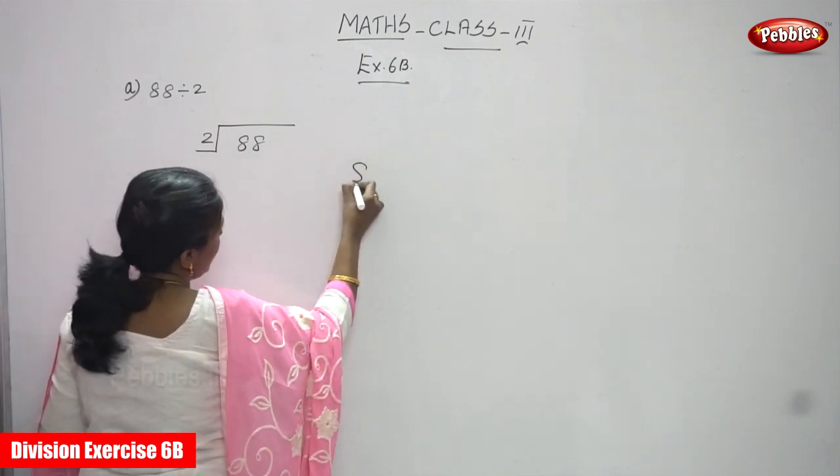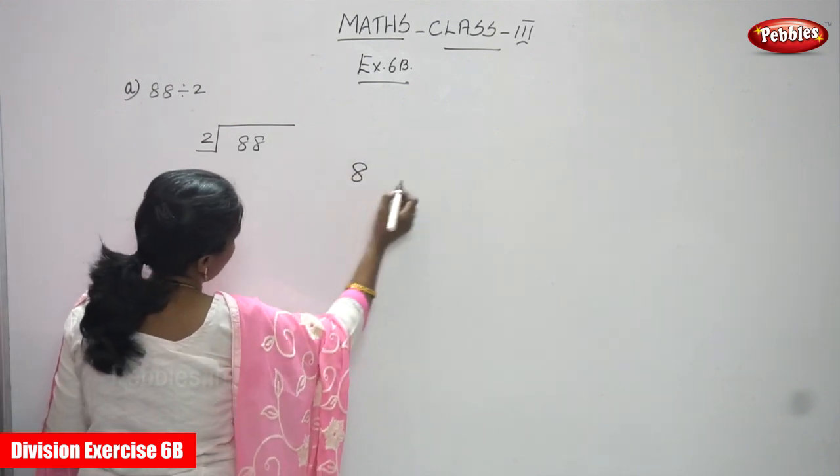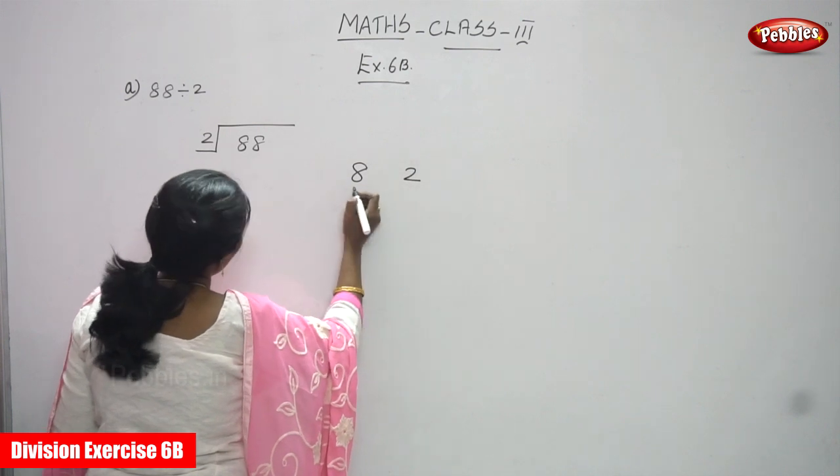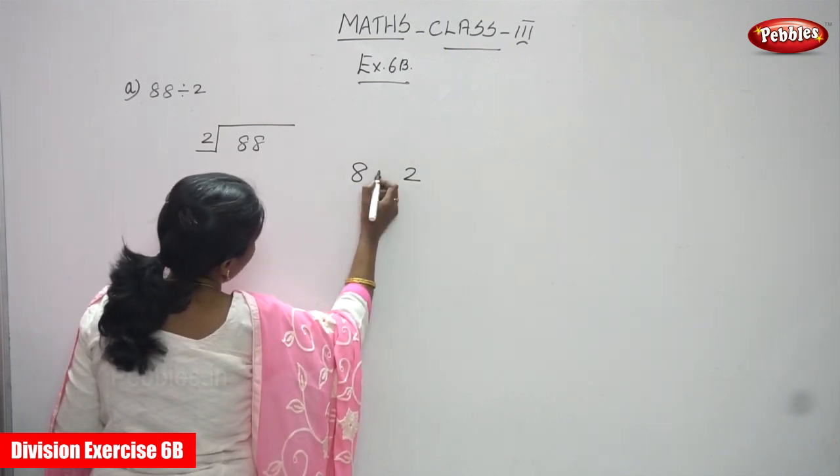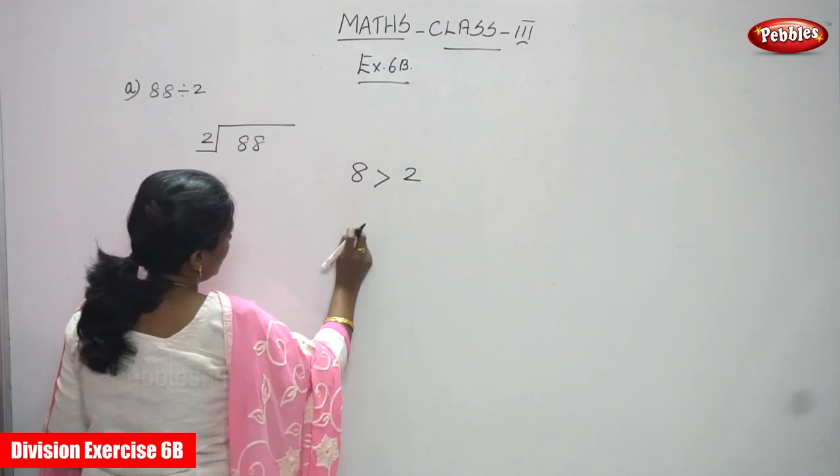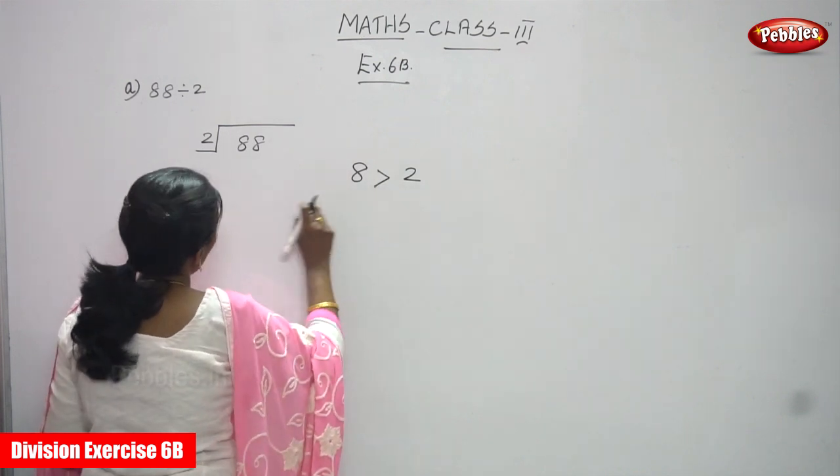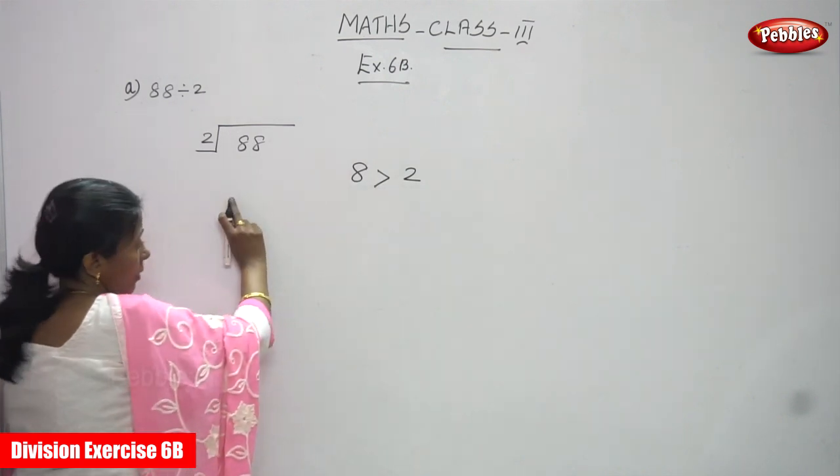So 8 is compared with 2. 8 is greater than 2. So it is eligible to divide. Okay, it is enough to divide.